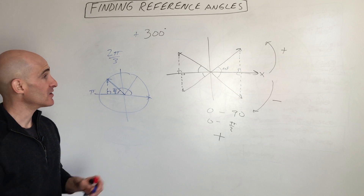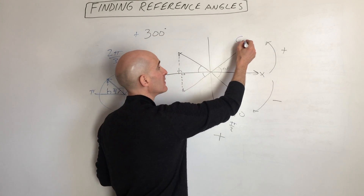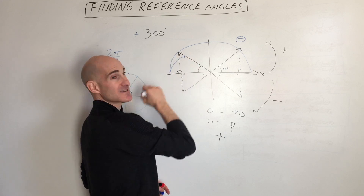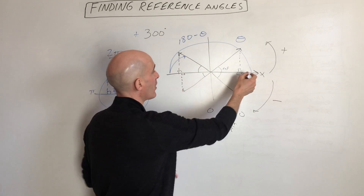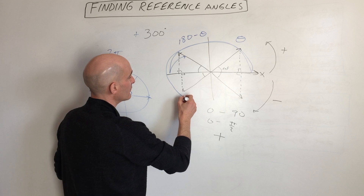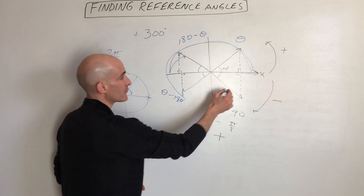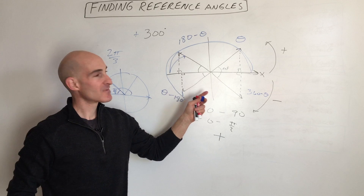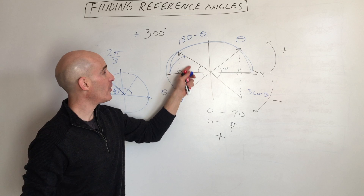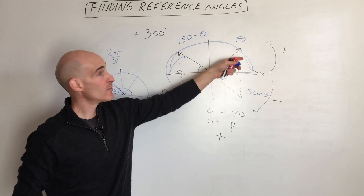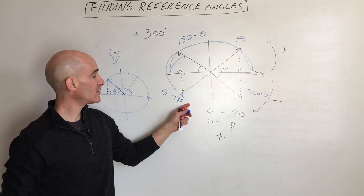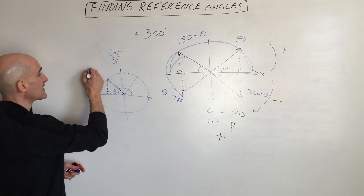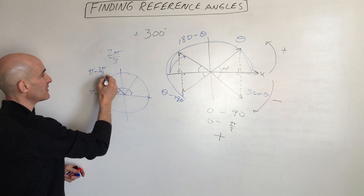Some books and teachers advocate using formulas. In the first quadrant, your reference angle is just theta. In the second quadrant, it's 180 minus theta. In the third quadrant, it's theta minus 180. In the fourth quadrant, it's 360 minus theta — or 2pi minus theta. I try to reduce formulas by just drawing the picture, since it's the angle formed between where the ray stops and the x-axis. But if these formulas help, use them. Applying this to 2pi over 3: we're in the second quadrant, so pi minus 2pi over 3 gives us pi over 3.